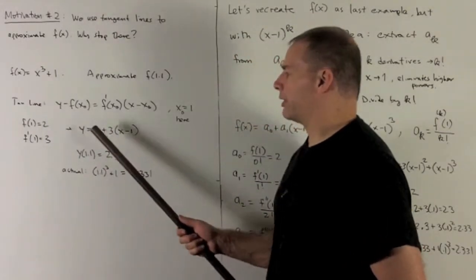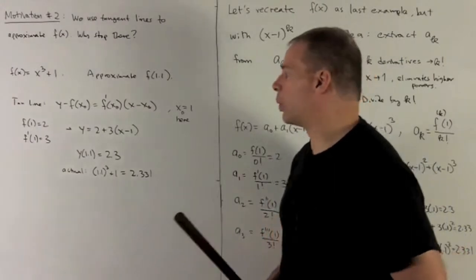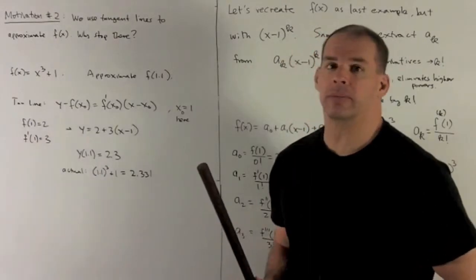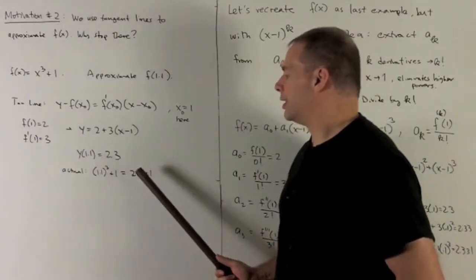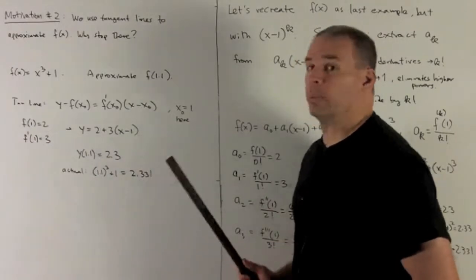We put our numbers in. So I'm looking at the line y equal to 2 plus 3 times (x minus 1). I put 1.1 in there, and that's going to give me 2.3. The actual value is going to be 2.331. So it's pretty good, but we can do better.